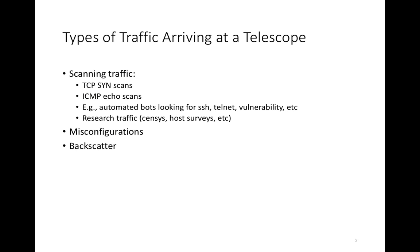What kinds of traffic might we expect to arrive at a network telescope? A large fraction is scanning traffic. For example, we might see TCP SYN scans and ICMP echo scans. These come from often automated bots or other kinds of surveys looking for different kinds of services — for example, bots trying to find SSH, or bots scanning the internet for telnet servers looking for a particular vulnerability.